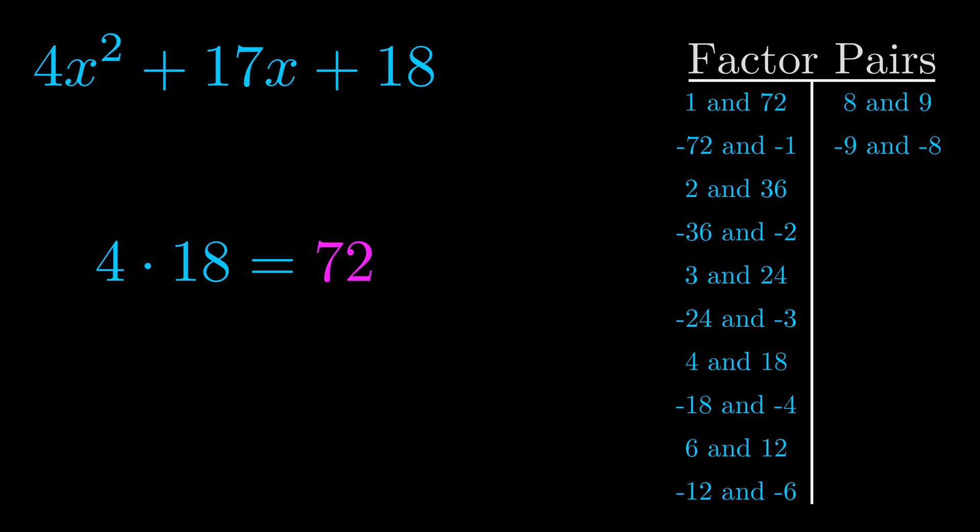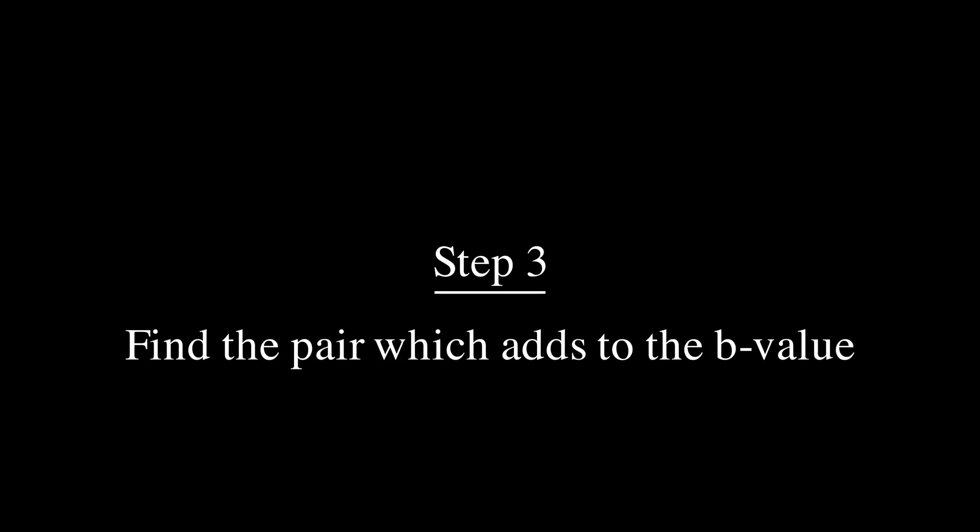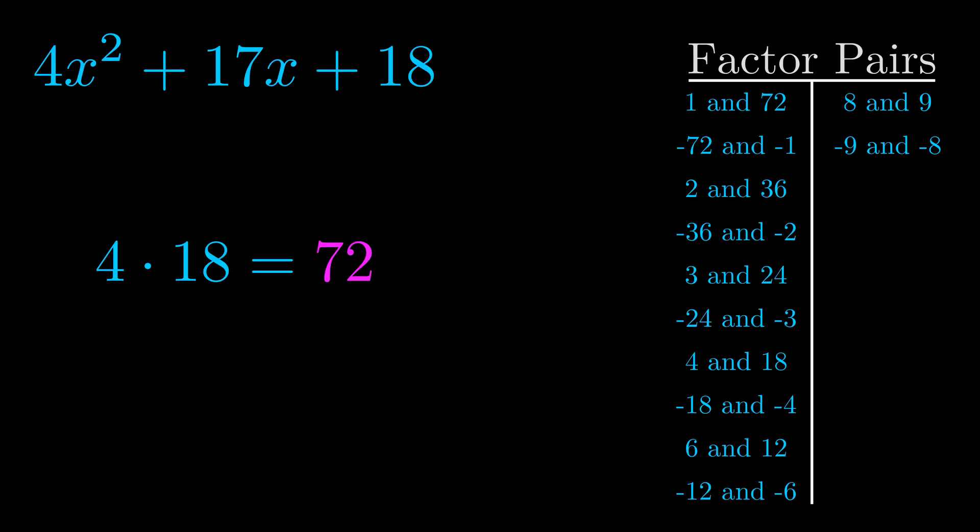Now once you have these factor pairs the goal is to find which of these pairs adds to the b value. The b value is the coefficient on the x term. That's the middle term, the one that we haven't done anything with yet. And really this is the only factor pair that we need.